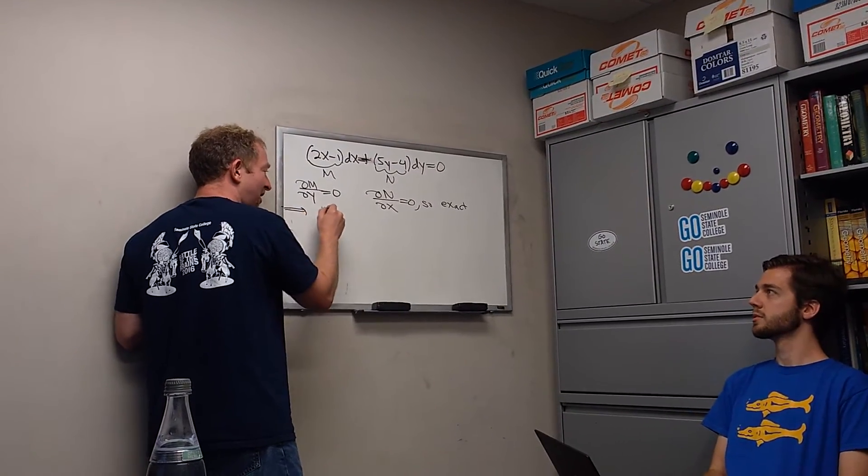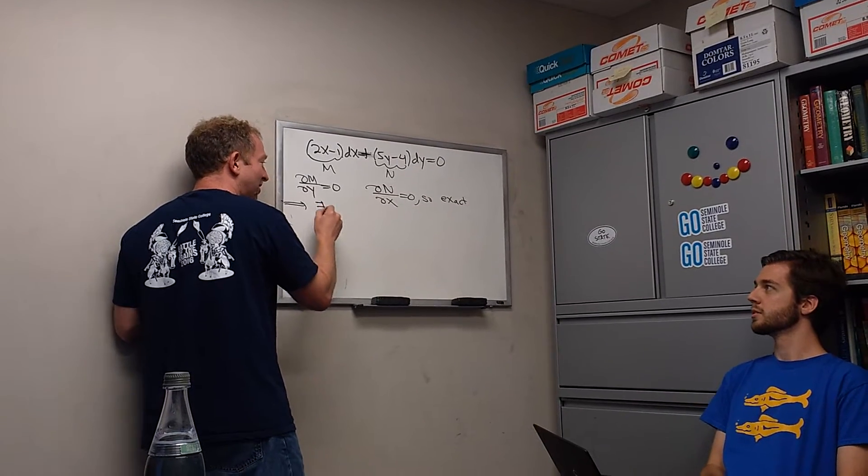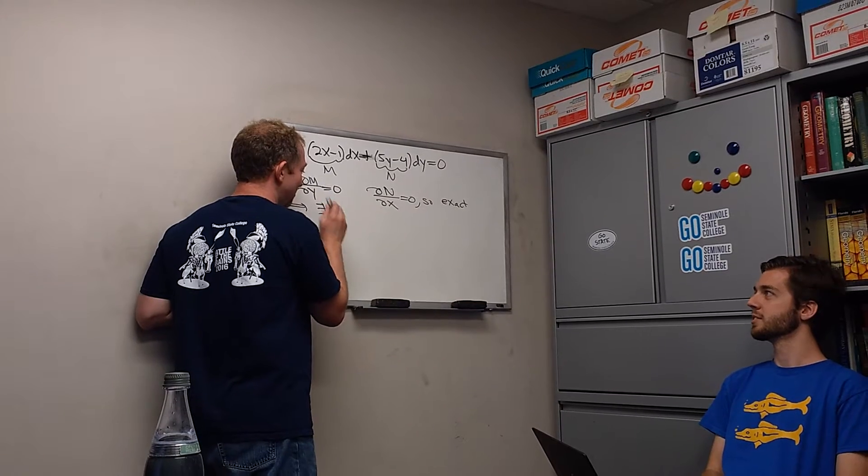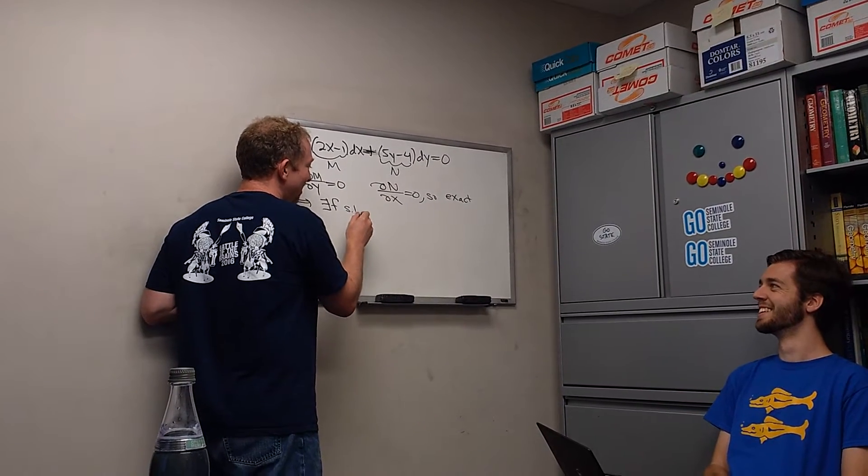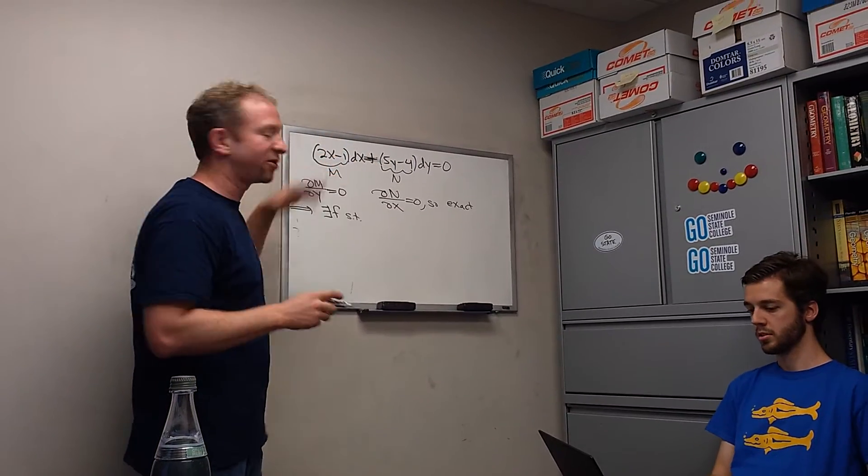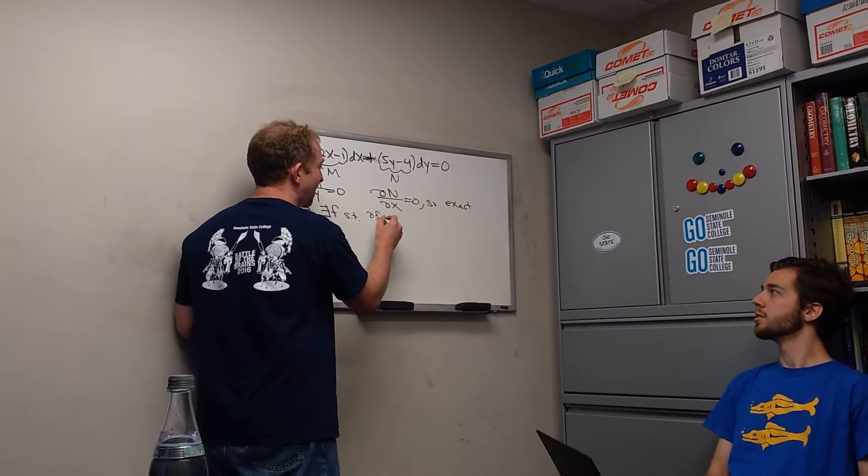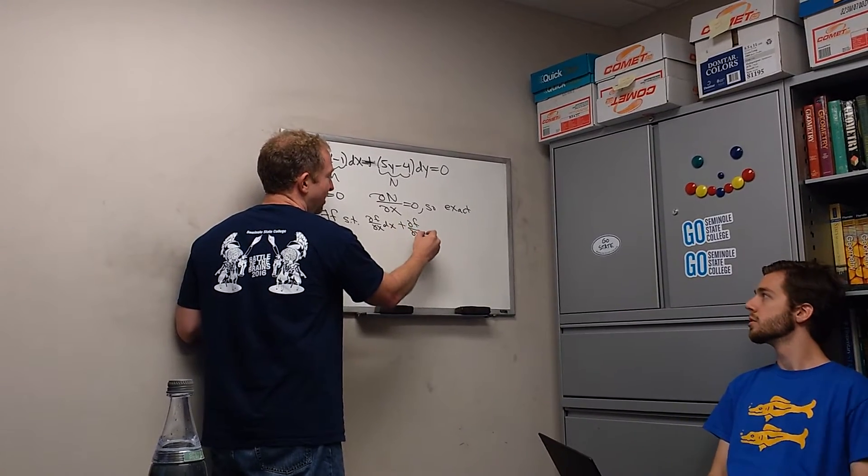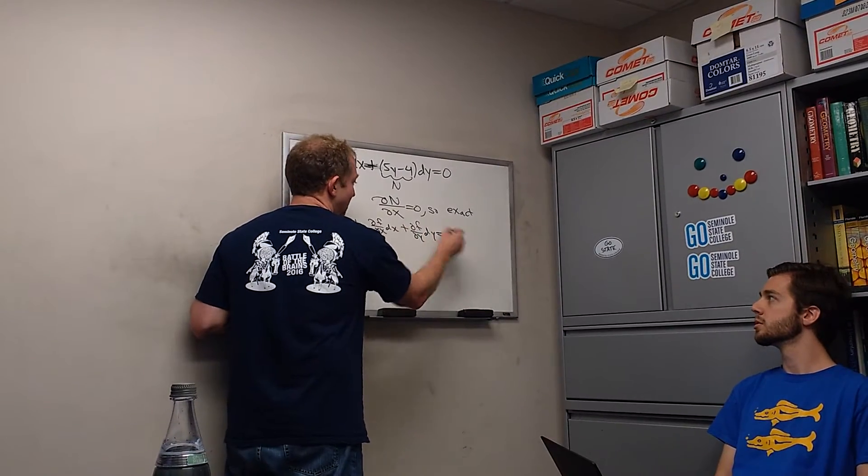Let's actually write down what that means. That means there exists, we're going to use the hardcore notation, that means exists. It's a backward z. It's like the exorcist. There exists a function f such that the total differential of f is the above left-hand side of the differential equation. In other words, del f del x dx. Since this is the first example I'll write it out,